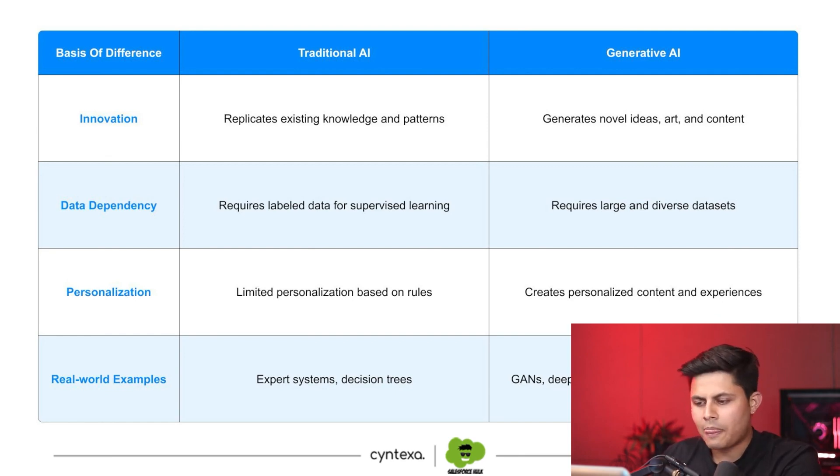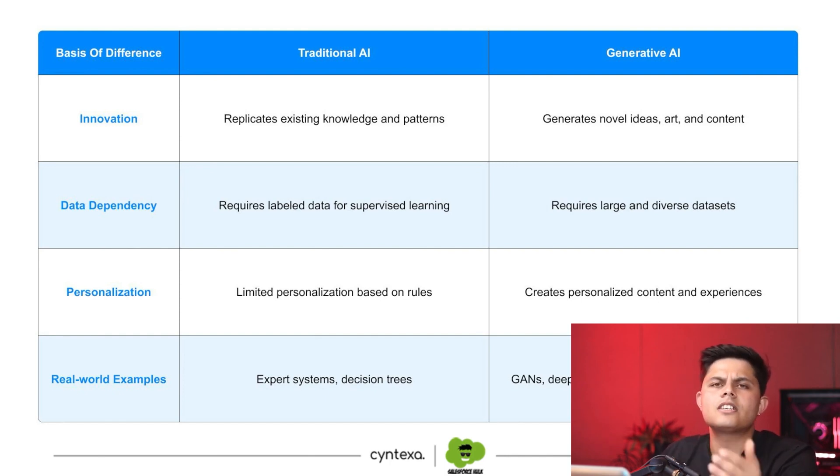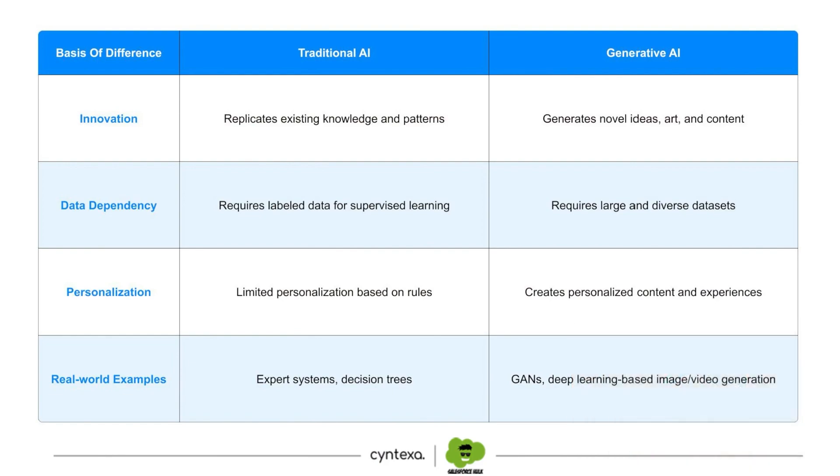In terms of personalization, traditional AI has limited personalization based on rules, while generative AI creates personalized content and experiences every time. Sometimes two people giving the same input to a generative AI get different outputs — that's the beauty of generative AI, just like two people of the same caliber and skill set might not produce the same output. For real-world examples, expert systems and decision trees represent traditional AI, while GANs and deep learning-based image and video generation represent generative AI.